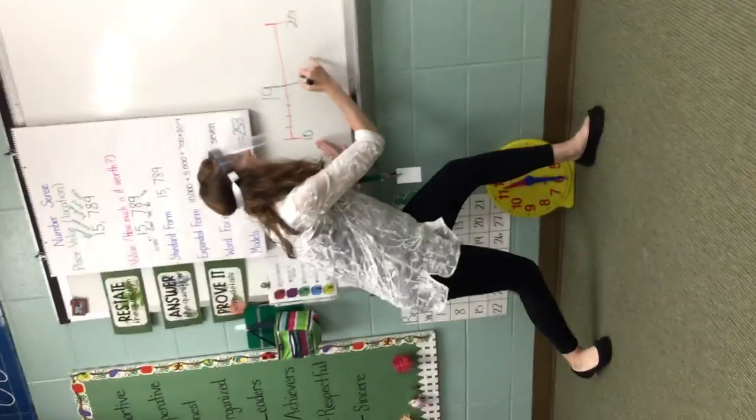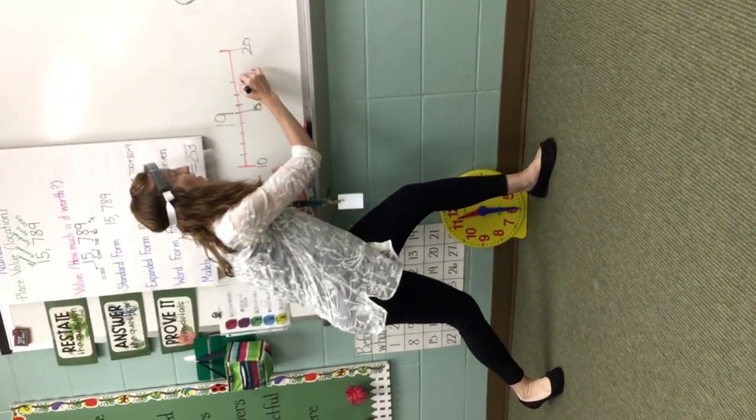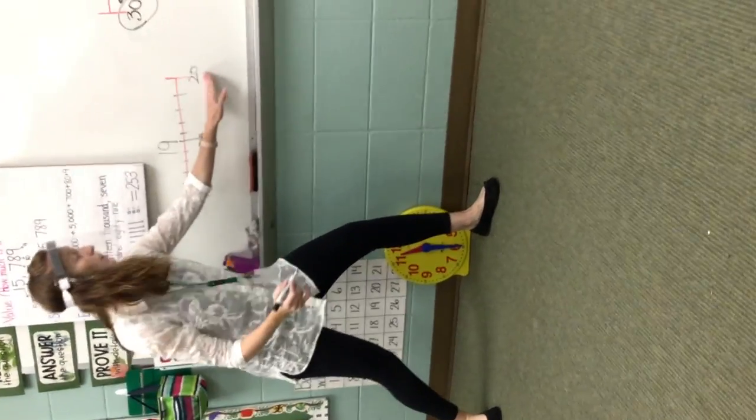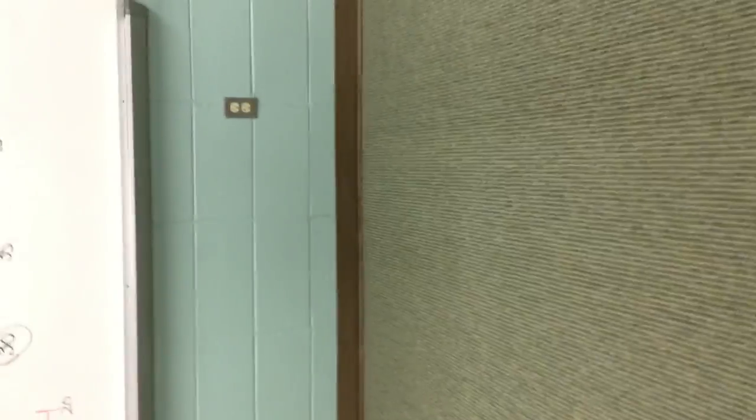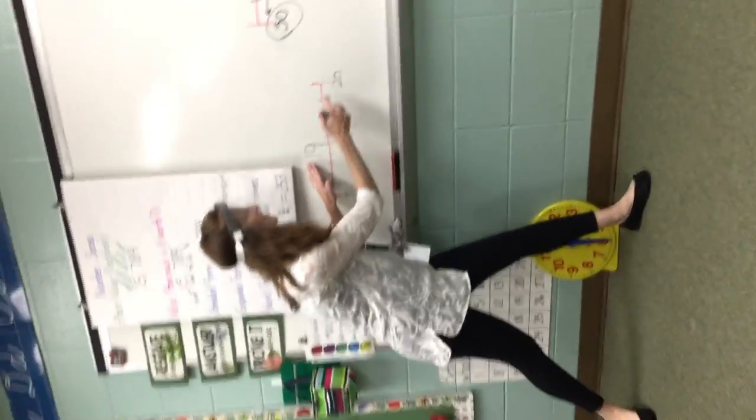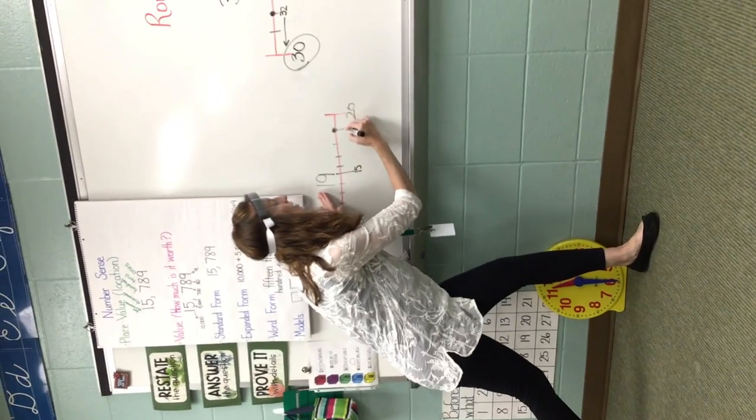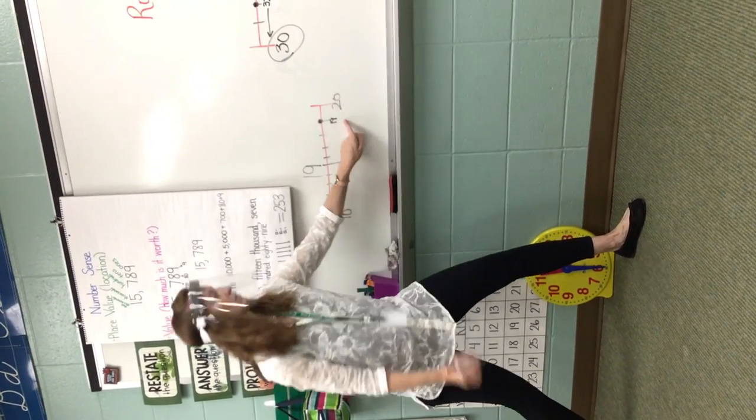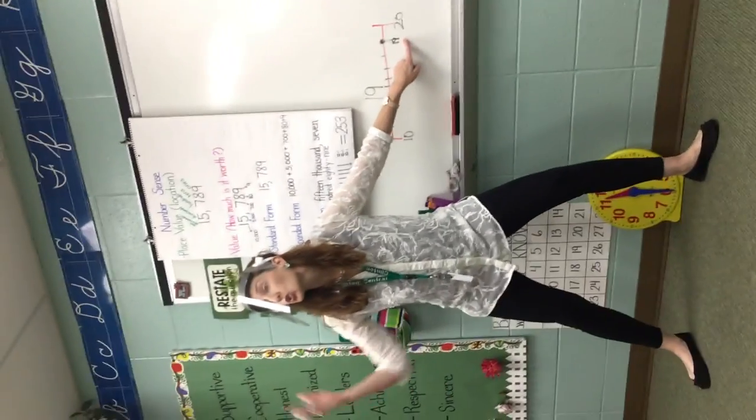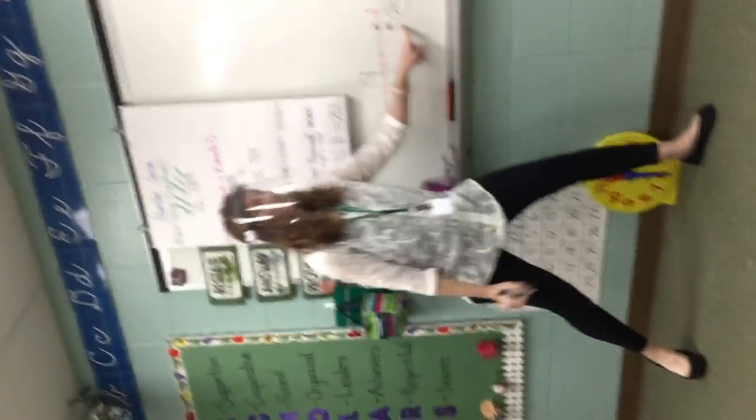Then I make my number line. Here we go. 10, 11, 12, 13, 14, 15, 16, 17, 18, 19, 20. If I'm plotting 19, that's 16, 17, 18, 19. Now I'm calling on all my scholars. If this is number 19, what's it closest to? 20. It rounds to 20.